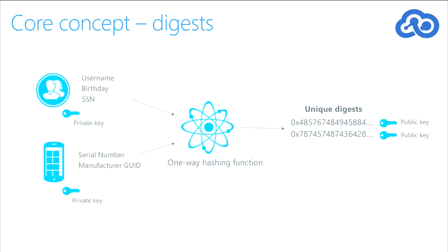One of the core components is these digests or digital signatures. On this slide, we have a couple of different use cases. We have a user with a username, a birthday, and an SSN — a social security number — and they have a private key. We also have a device, in this case a phone, that has a serial number and a manufacturer GUID. That device also has a key it can use to sign things with. When we do a signing operation, we use that key and run a hashing algorithm — a one-way hash — that allows us to generate a unique digest. You can think of that unique digest as a public key.